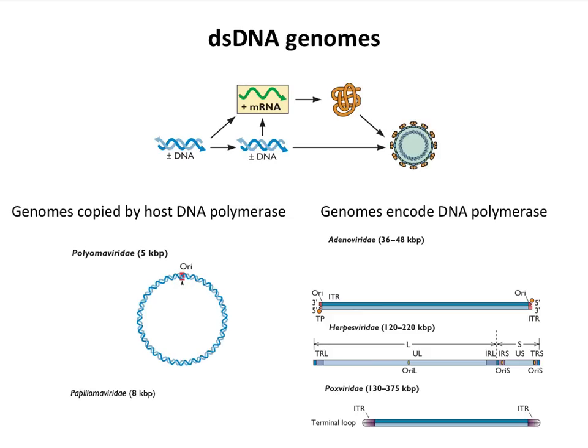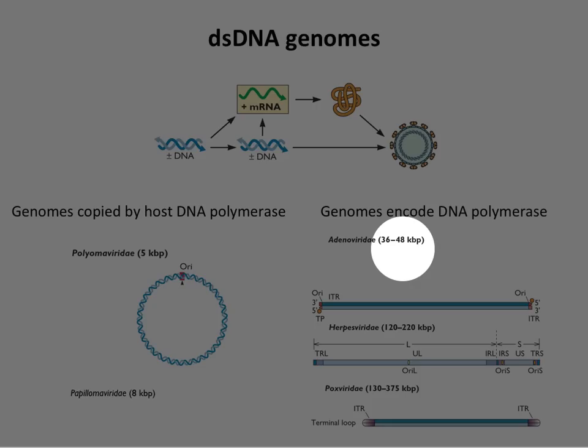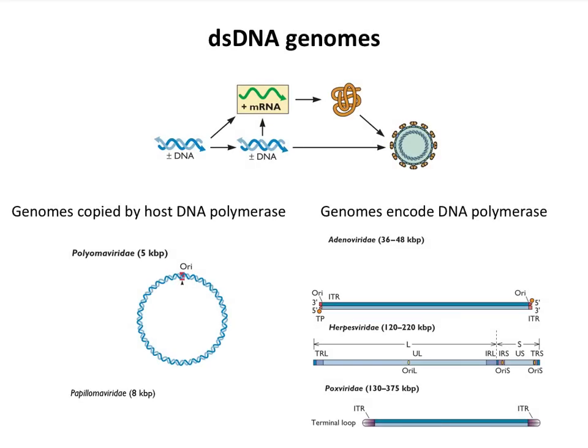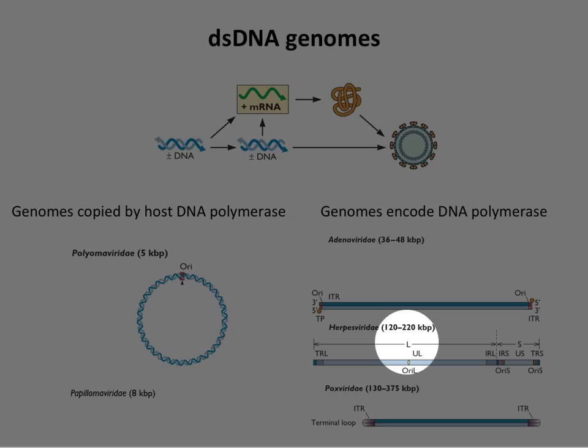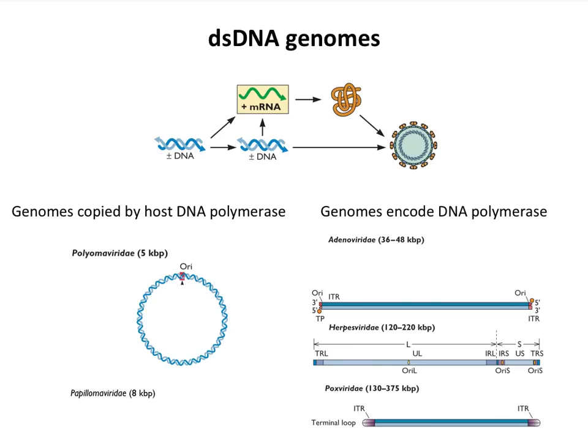These genomes have to go into the nucleus to make RNA and to replicate. Bigger genomes can therefore encode their own DNA polymerase. The adenovirus genome is between 36,000 and 48,000 bases long — a single strand of double-stranded DNA — unusual because it has a protein linked to the five-prime ends. Herpes virus genomes range between 120,000 and 220,000 base pairs. The key concept: big genomes encode DNA polymerase, and small ones do not.